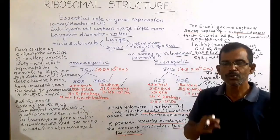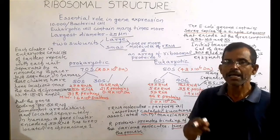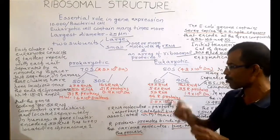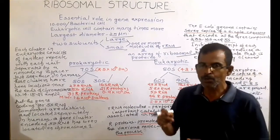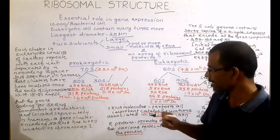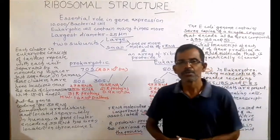But the genes encoding for 5S RNA are distinct and are present on a separate chromosome. In humans, the gene encoding for 5S RNA has been located on chromosome 1.